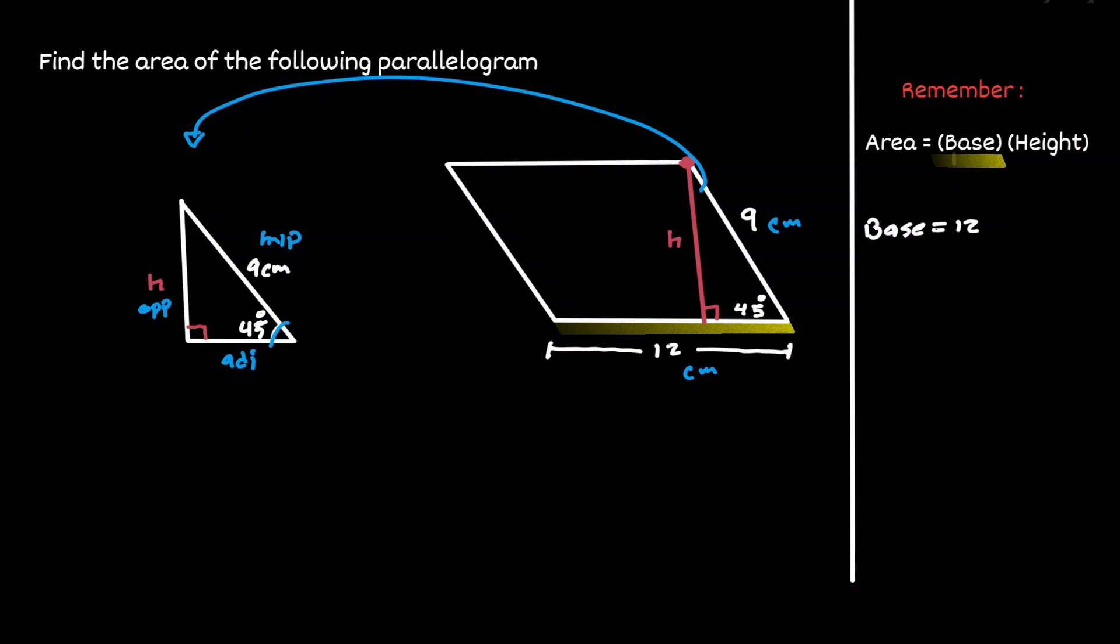Within this right triangle, notice that we have the value of the hypotenuse and we want the value of the opposite. We can conclude that we can use the sine function because it is defined as opposite over hypotenuse.